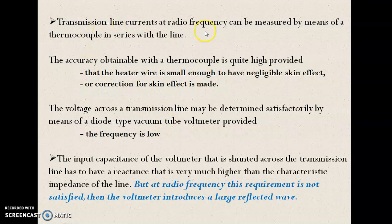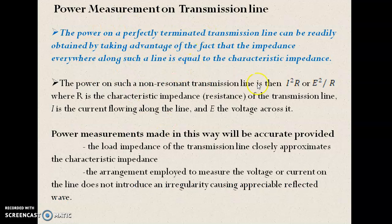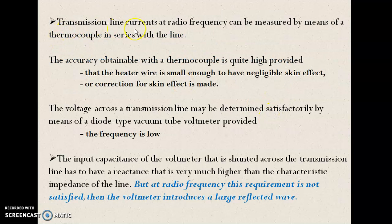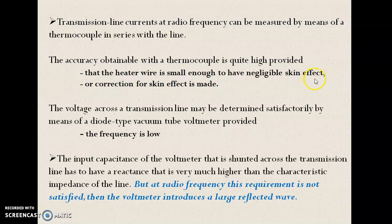The transmission line current — if we know the characteristic impedance of the coaxial cable, the current can be measured at radio frequency. At high frequency, the current can be measured in the transmission line using a thermocouple. A thermocouple can be used to provide accurate current measurement, only if the heating wire of the thermocouple has a very negligible amount of skin effect.